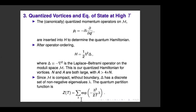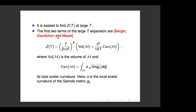This is a standard construction in spectral geometry, so we can use known results about the spectra of the Laplacian on compact manifolds. In particular, there are relatively simple results at large T. The first two terms of the large-T expansion come from a classic result in spectral geometry: there's a prefactor, and then the leading term is the volume of the moduli space, with a first correction involving the integrated scalar curvature of M — the total scalar curvature.